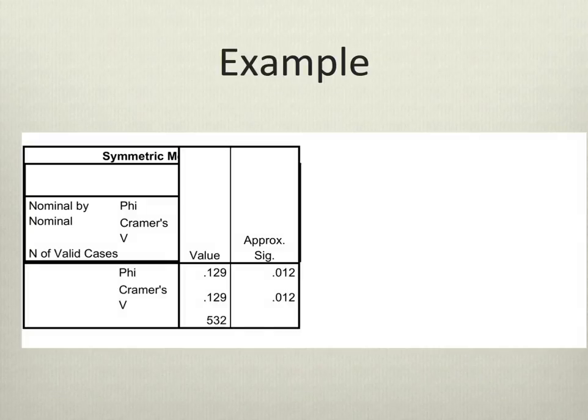Now, in our example, we have nominal by ordinal data. It could be considered a 2 by 2 if I had made not voting a missing option, but since we have not voting as a valid option, I have a 2 by 3 table, and I'm going to use Cramer's V. We can see in this table that the result of Cramer's V is .129 — weak, but worth noting. So gender is part of the picture as to why this proposition failed.